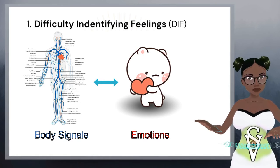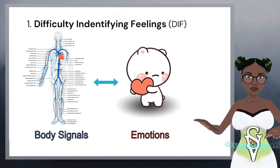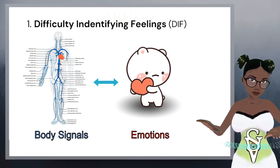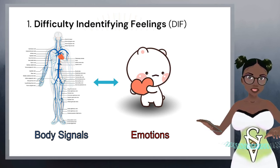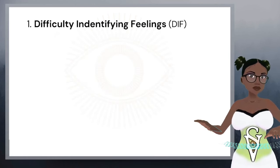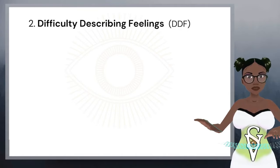There's a lot to this and I could explain these points in more detail, but as this is just an introduction to the concepts, I'm going to highlight what I see to be the most salient points. Moving on to number two: difficulty describing feelings to other people.